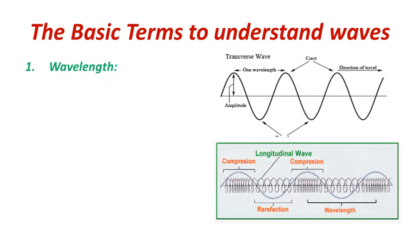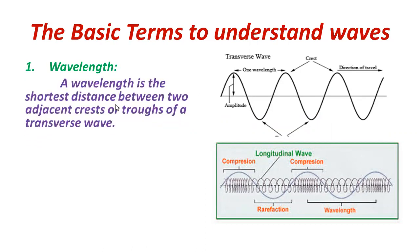The first important term about waves is wavelength. A wavelength is the shortest distance between two adjacent crests or troughs of a transverse wave. In our previous topic we discussed the types of waves: transverse wave and longitudinal wave. In a transverse wave, the highest point from the resting position is called the crest, and the distance from the resting position is called amplitude.